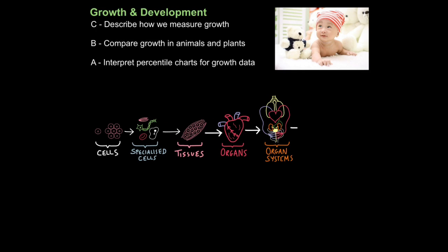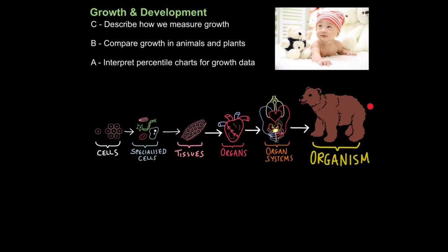Tissues are groups of similar cells that perform a function. Organs are groups of tissues that work together to perform a function. And organ systems are groups of organs that work together to perform a specific function. So the circulatory system and its organs, the heart, blood vessels, their function is to pump blood around the body. And when you put all those organ systems together, you have an organism.